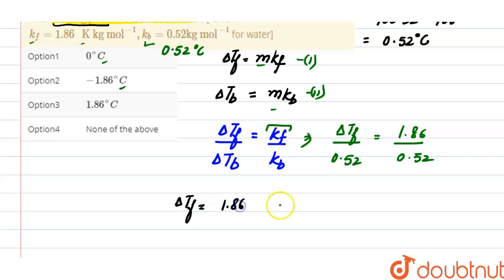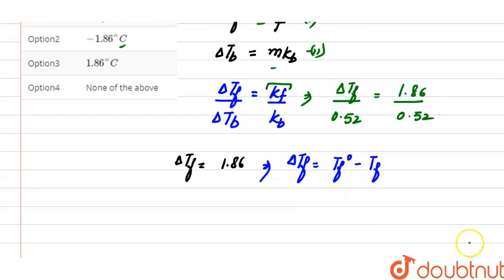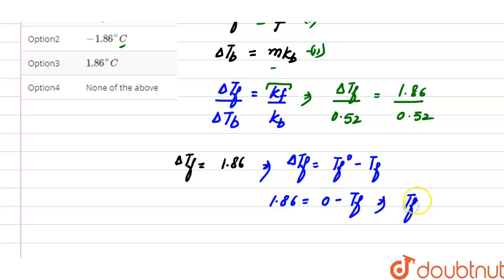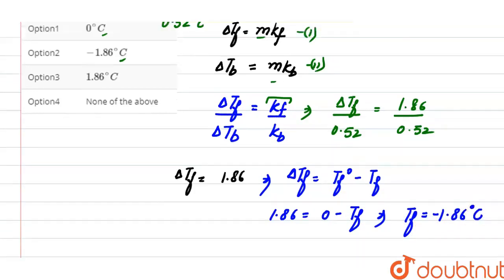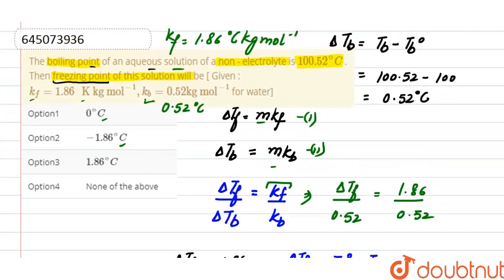Since ΔTf equals freezing point of solvent minus freezing point of solution, and ΔTf is 1.86, freezing point of solvent is 0°C, so 1.86 equals 0 minus Tf. Therefore, the freezing point of the solution Tf equals minus 1.86°C, and the correct option is option 2.